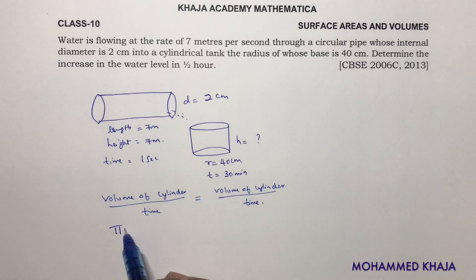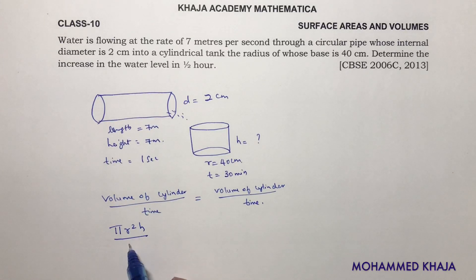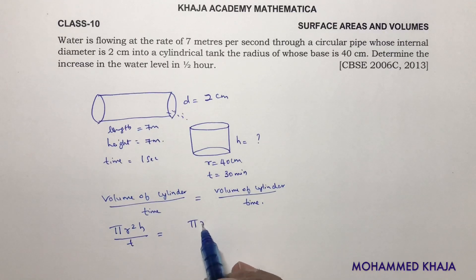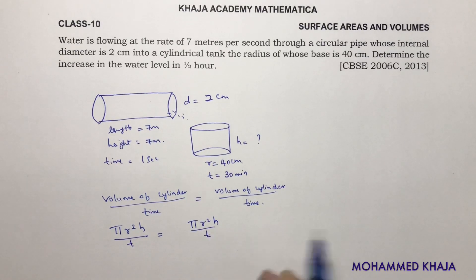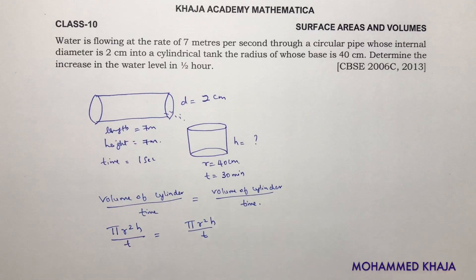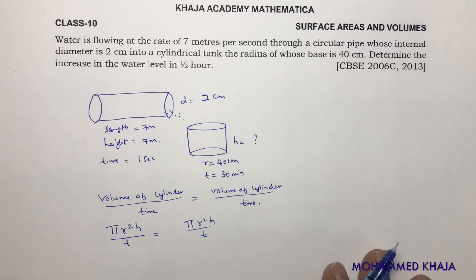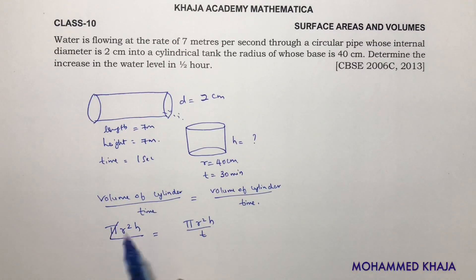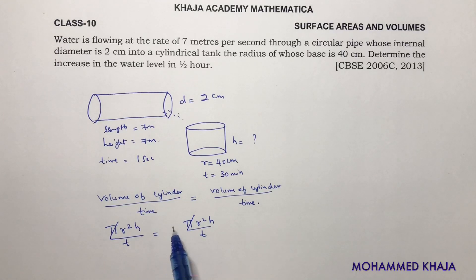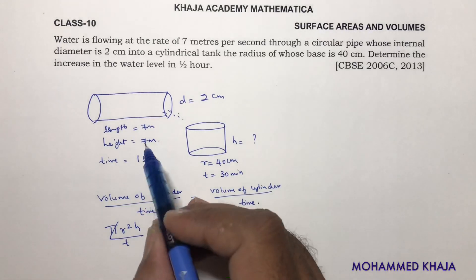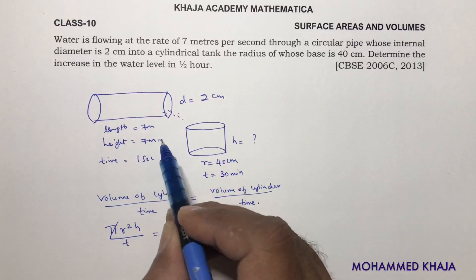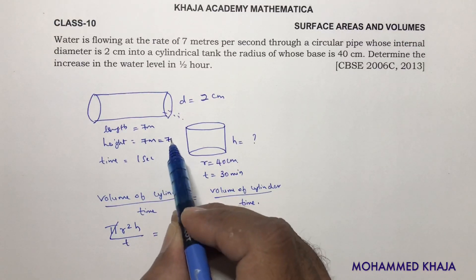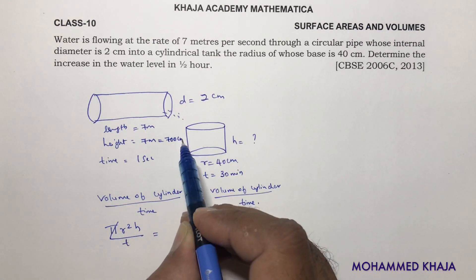Volume of the cylinder is π r² h divided by time, and this equals π r² h divided by time for the tank side as well. Pi cancels on both sides. Before substituting values, check that all quantities are in the same units. The height is 7 meters, so I will convert it to centimeters: 700 centimeters.